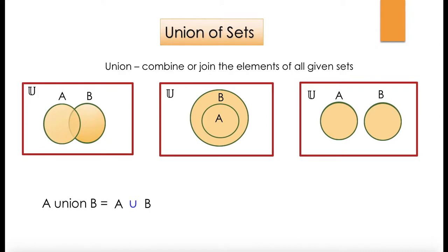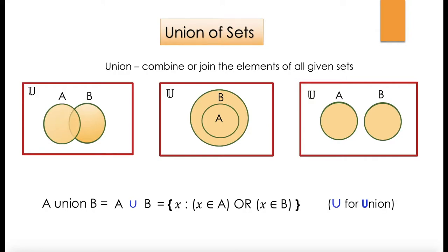A union B is written as A, the union symbol, and B, and we say X is such that X is an element of A or X is an element of B. The symbol U is for union — that's the way to remember it. For the diagram where A is contained within B, A union B is simply B, because A is already contained within B, so the union gives us every element of B.